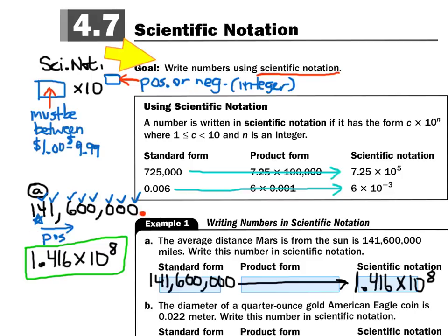That would be like $1.42, and that's between $1 and $9.99. Now imagine you're standing on the star like Katniss, and you're about to shoot an arrow to pop the red balloon — the red balloon is the decimal point. Notice how the arrow would go in the positive direction, which tells me the exponent is positive. Then I just count every digit between the star and the decimal point: 1, 2, 3, 4, 5, 6, 7, 8. That gives me a positive 8 for my exponent.